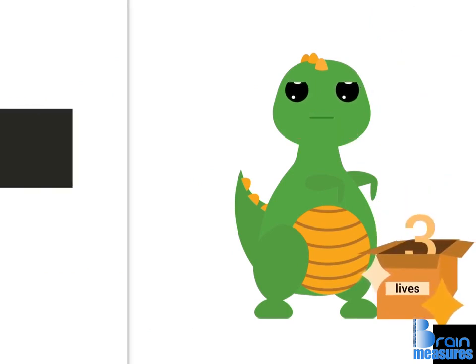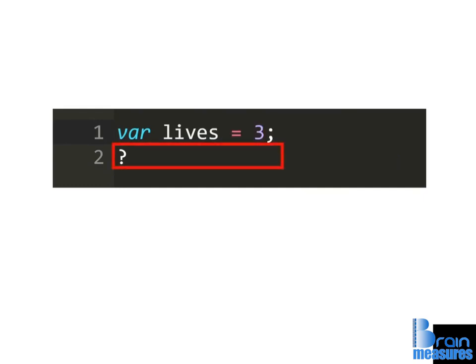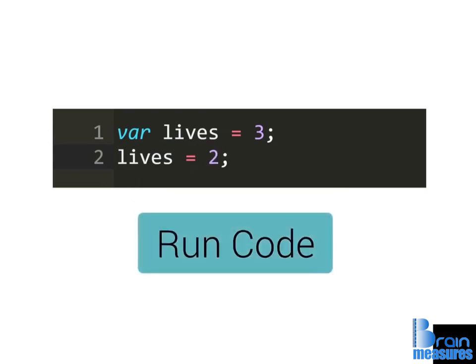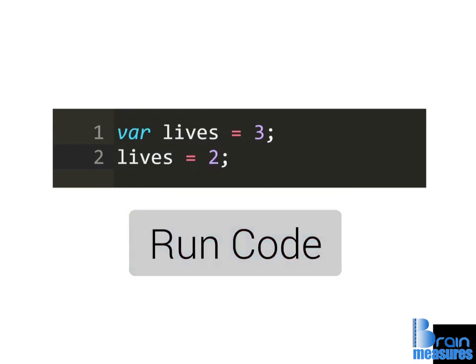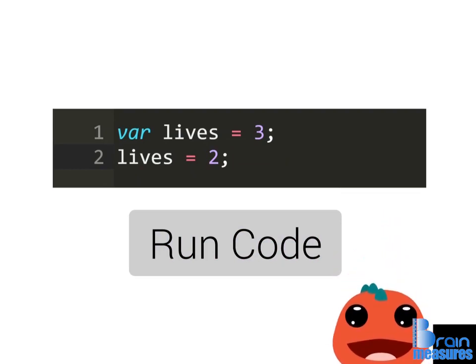Let's try this out in the code editor. Create a variable named lives and give it an initial value of 3. Then on the next line, change its value to 2. Once you're done, hit run code and pay attention to how the program works with the boxes.